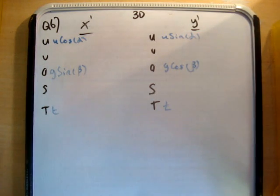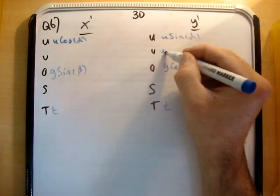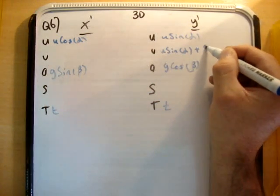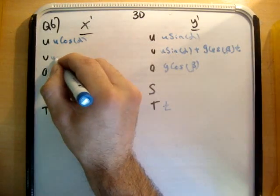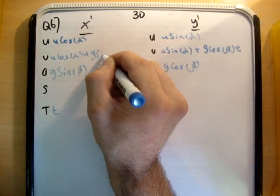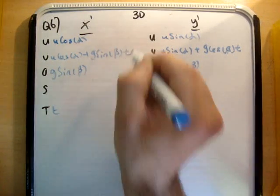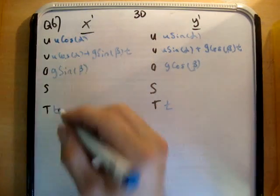The next thing we need to do is put in the velocity vectors. v equals u plus at. So we get u times sine alpha plus g cos beta t, and we get u cos alpha plus g sin beta t.